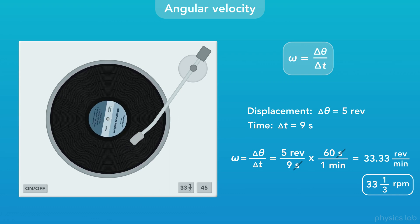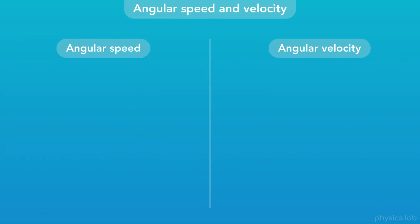So is the angular velocity actually negative 33 and a third RPM? Now's a good time to review the difference between angular speed and velocity. Remember that speed is a scalar and only includes the magnitude,